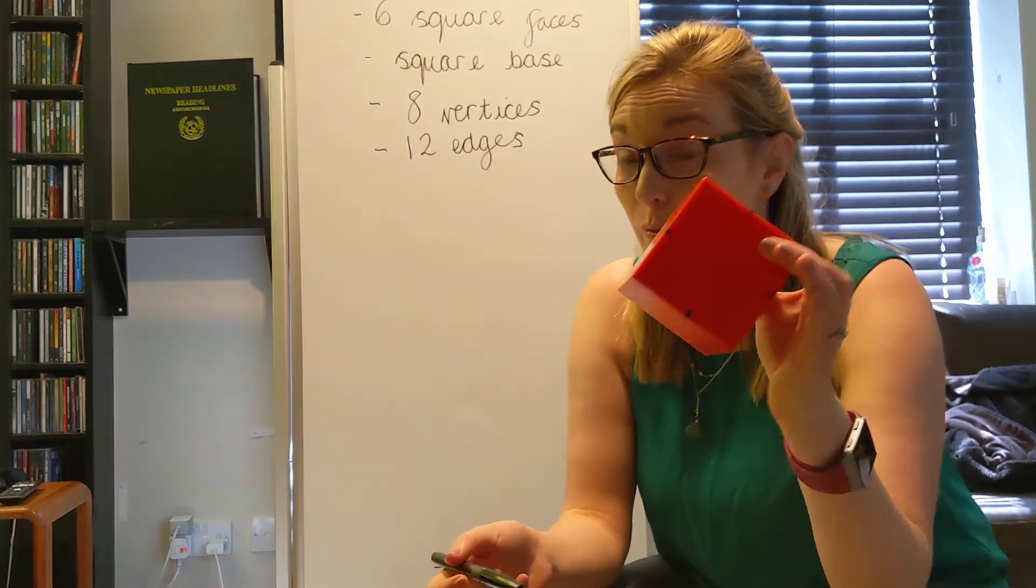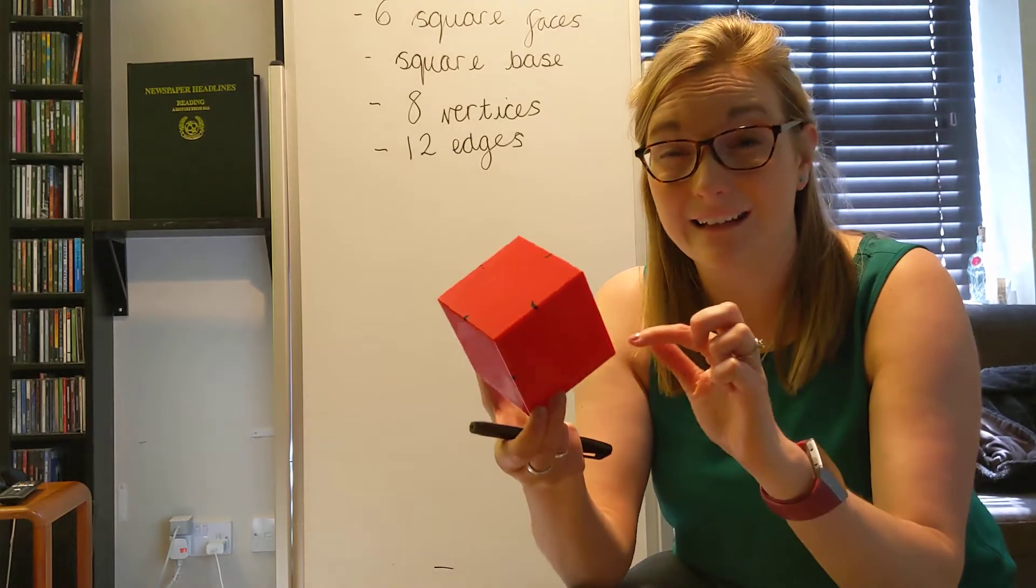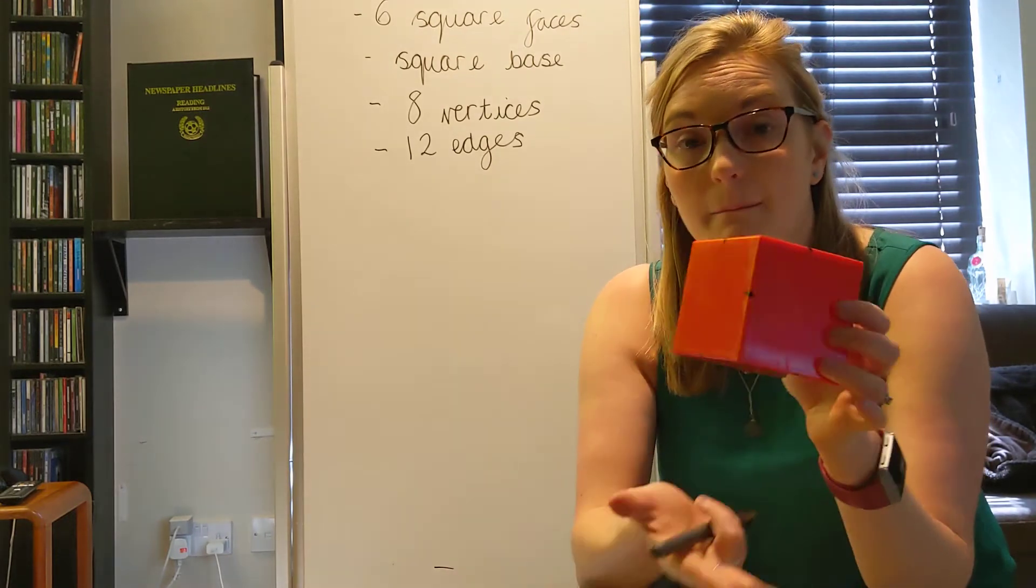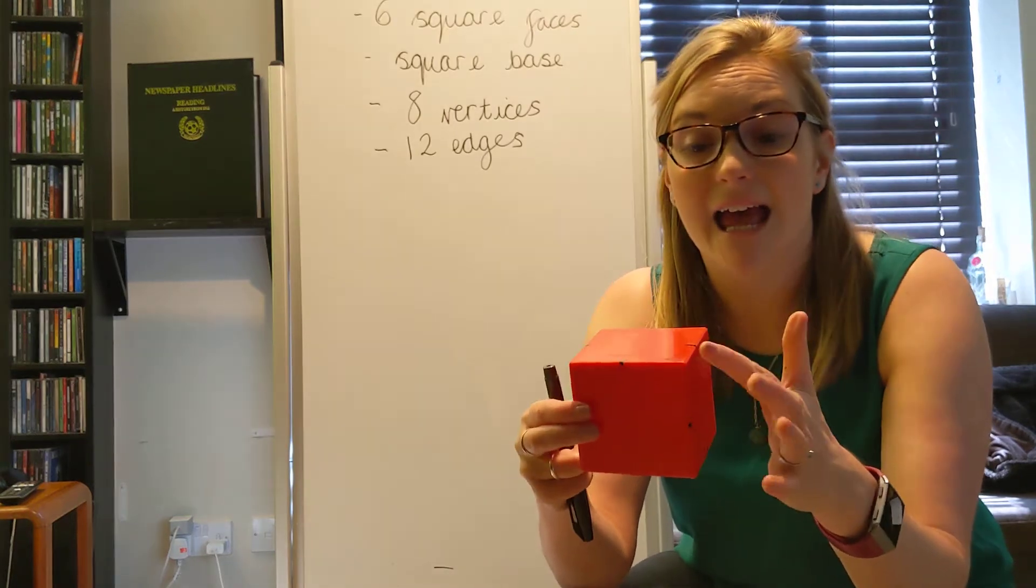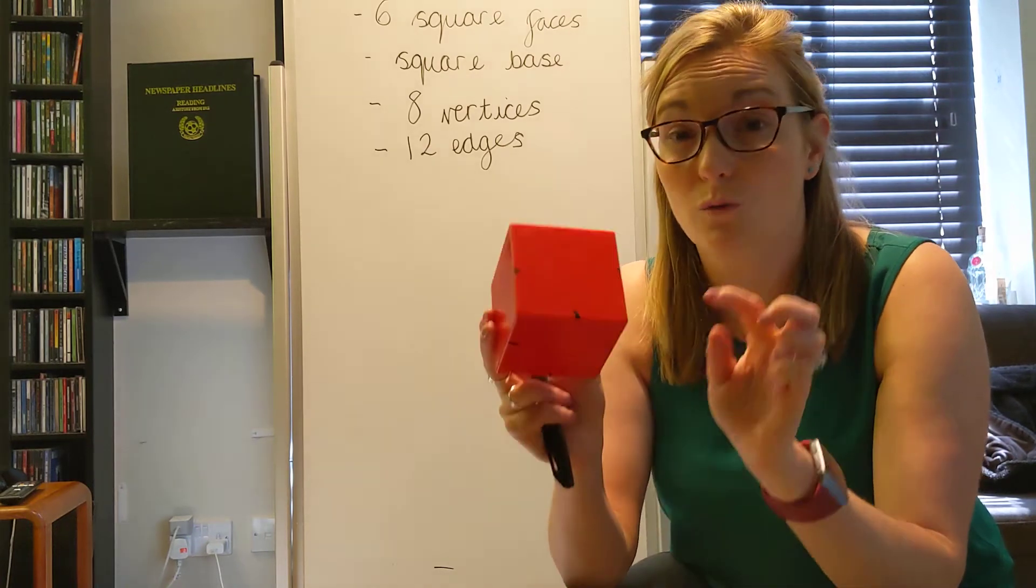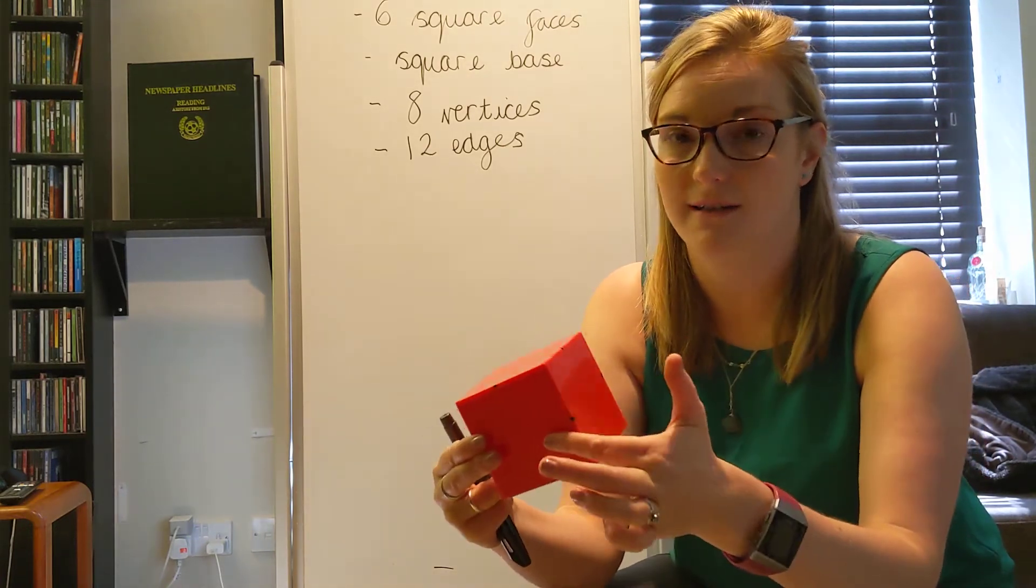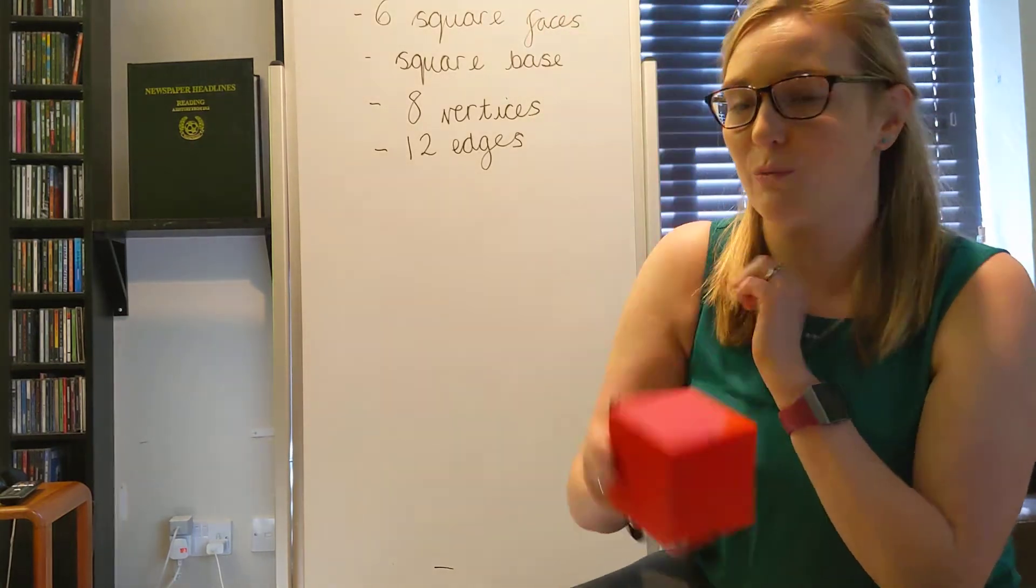So this is a cube. Okay, we can tell it's a cube because it has six square faces. At the base, it is a square. It has eight vertices and twelve edges. Fantastic. So this is a cube. Well done. I'll pop that down here.